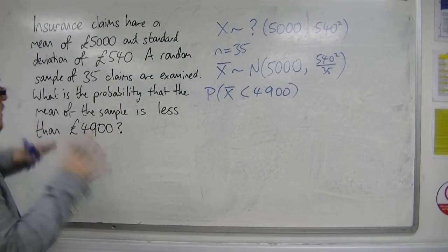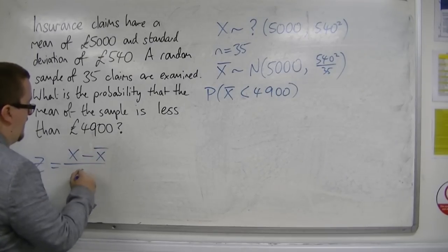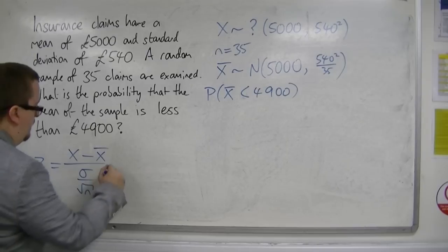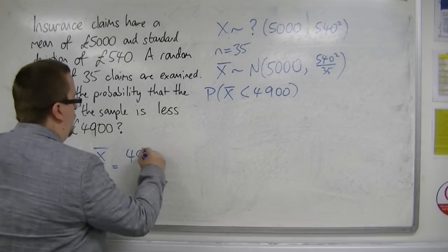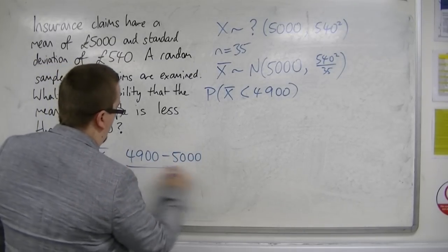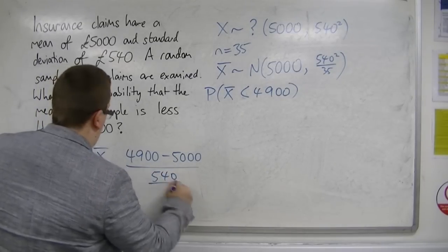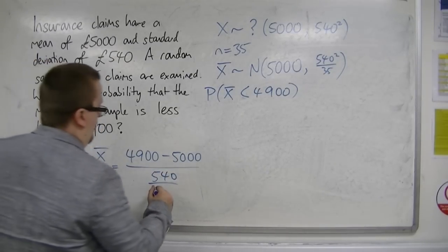So we're going to use z equals x minus x-bar over the standard error. So x is 4,900, x-bar is 5,000, sigma is 540, and root n is the square root of 35.